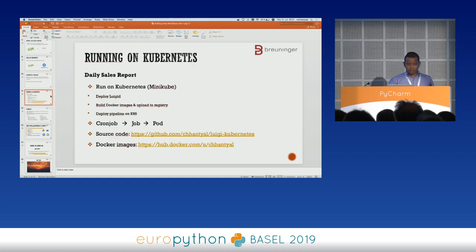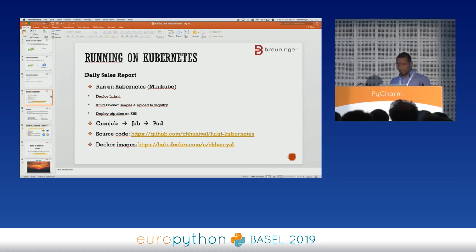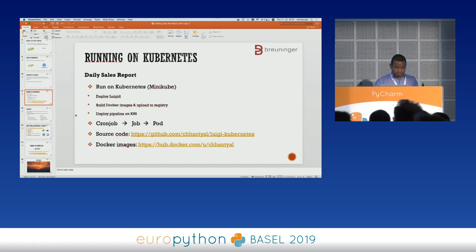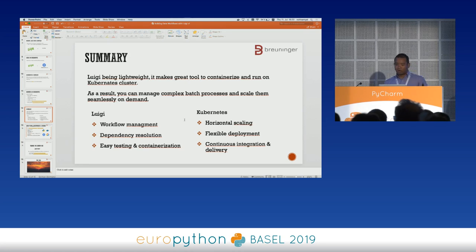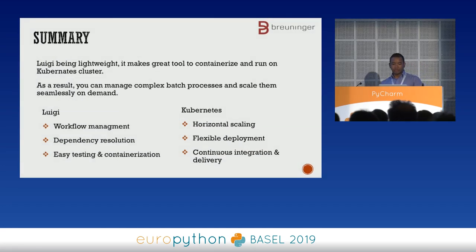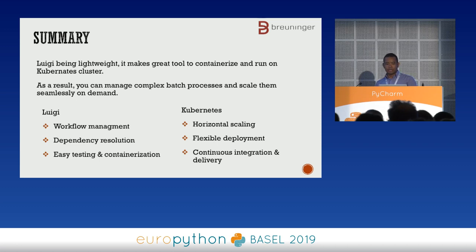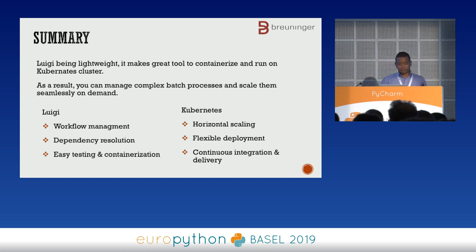That is it. You can follow the example on my GitHub. Luigi being lightweight, it's really easy to containerize and deploy on Kubernetes. As a result, you can build complex batch processes which are easy to scale and maintain. You get the benefit of both: the pipeline tooling of Luigi and the infrastructure side of Kubernetes, like horizontal scaling and flexible deployment.